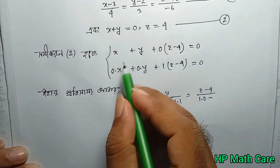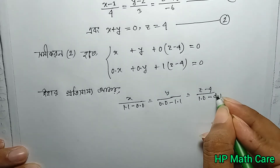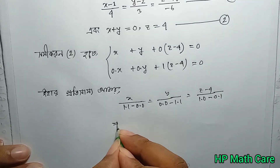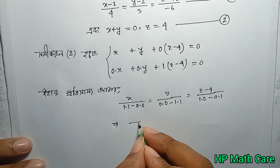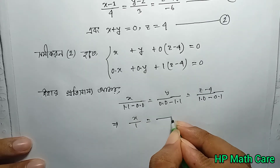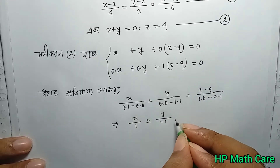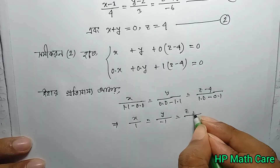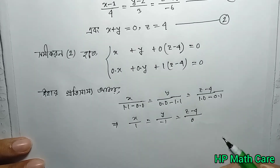From the cross product calculation: 0 into 1 becomes x by 1, y by minus 1, z minus 4 by 0.